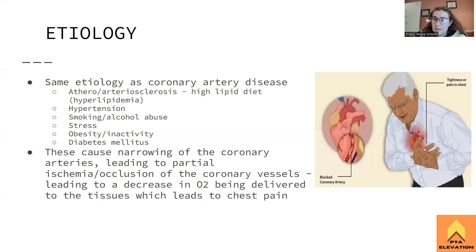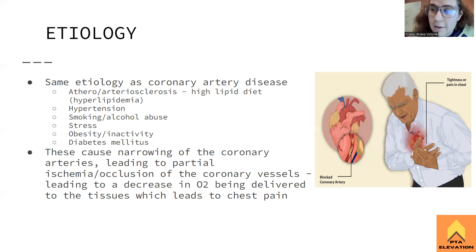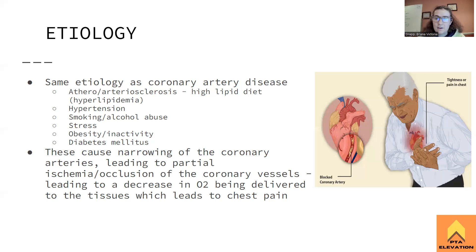The big thing to understand with angina pectoris: all of these causes lead to narrowing of the coronary arteries, which produces partial or temporary ischemia — a temporary occlusion of the coronary vessels. When we lose blood flow, we lose oxygen delivery to the myocardium, leading to chest pain. Think of this like a tourniquet on the heart — when you remove a tourniquet after temporary occlusion, blood rushing back is extremely painful, and even having it on causes severe pain.